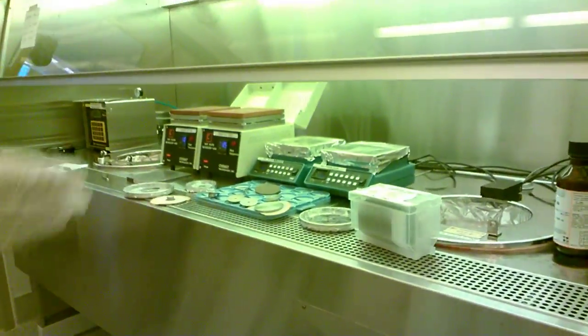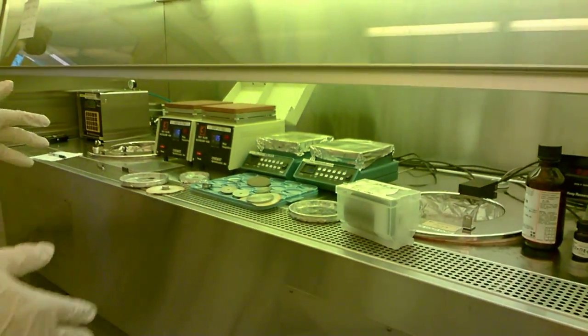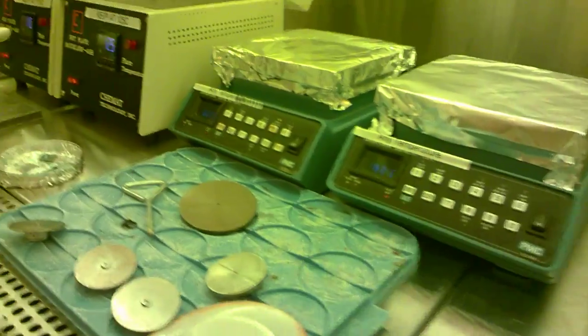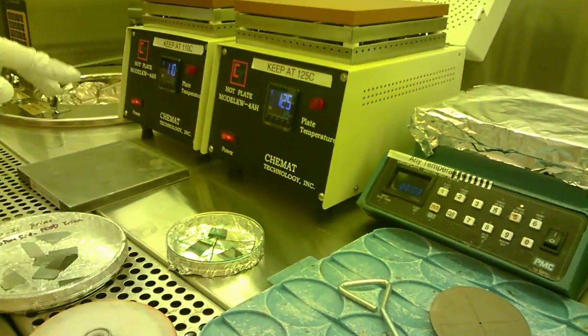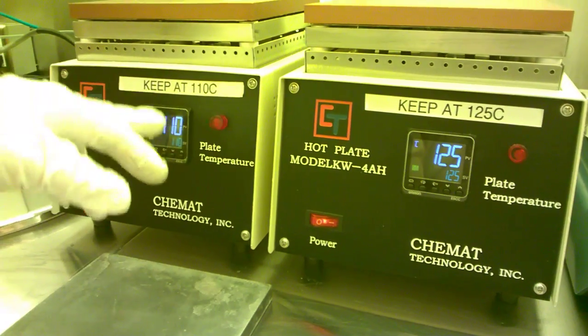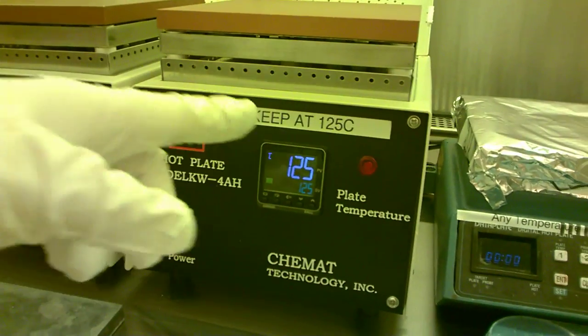This hood is used for the spinner. We also place four hot plates here. Please keep both of them at constant temperature: keep this one at 110 and this one at 125.